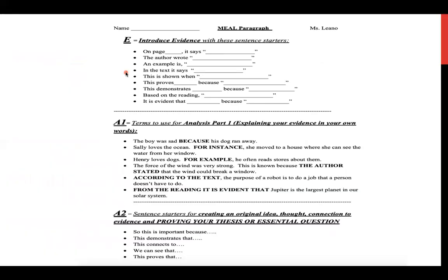You have a document in your writing folder — this is very important and will help bring your writing a level up. It contains sentence starters for your evidence. You need to use a sentence starter. There are different transition words for analysis one: 'because,' 'for instance,' 'for example,' 'the author stated.' At the bottom are sentence starters for proving your thesis: 'This is important because this demonstrates that,' 'This connects to,' 'We can see that,' 'This proves that.' Take this out of your writing folder and keep it on your desk when writing your essay. I'll also add it to Google Classroom.